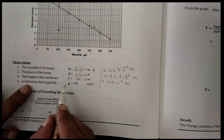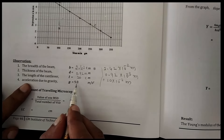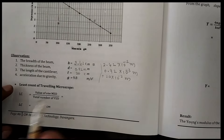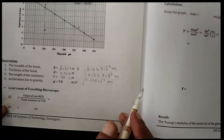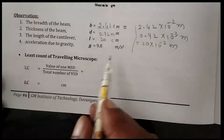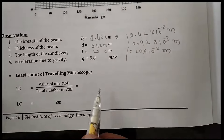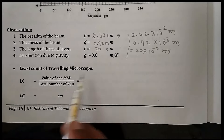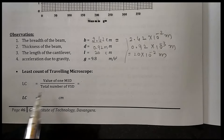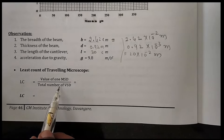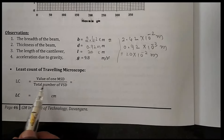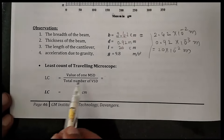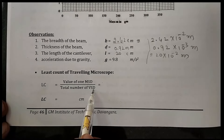The acceleration due to gravity is constant: G = 9.8 meters per second squared. To find the depression, we are using the traveling microscope. This traveling microscope has a least count that can be measured using the formula: LC = value of 1 main scale division divided by the total number of vernier scale divisions.